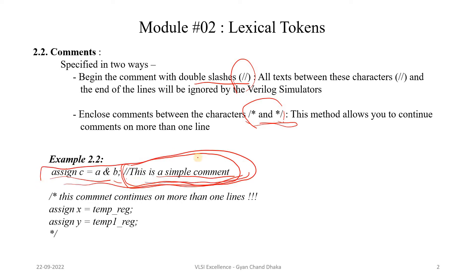Single-line statements can be commented using double slash. But if you see the next section, we are commenting multiple lines — one statement and two statements. To comment out multiple lines or multiple statements, we have to use the second approach of commenting, which starts with slash-star and ends with star-slash.